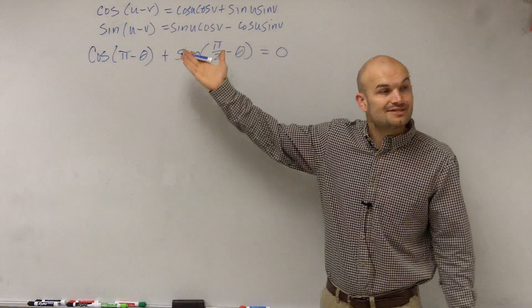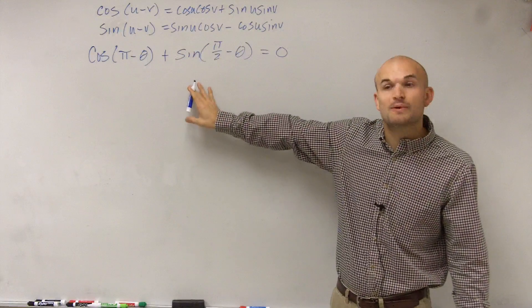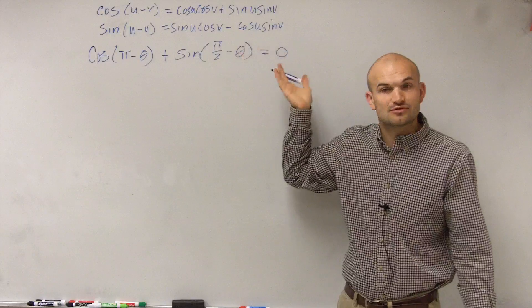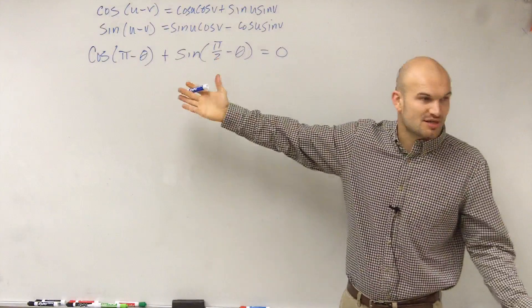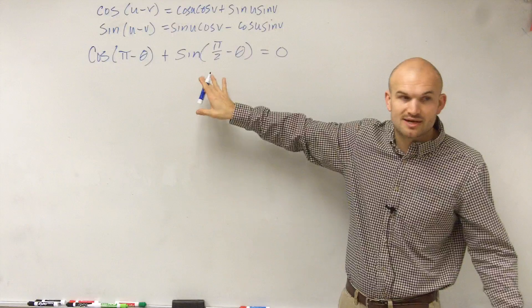So what I'm going to do is I'm going to apply these two formulas for here because we want to verify that my left side is equal to my right side. I could also look into using co-function identities for here, but the question says use sum and difference, so I'm going to have to apply sum and difference.